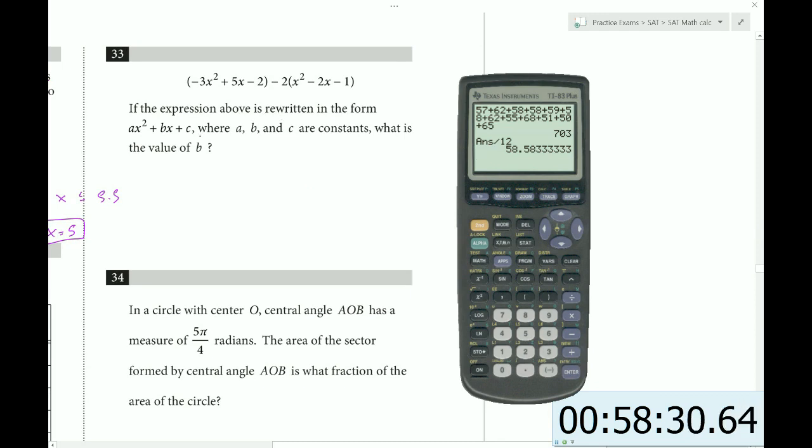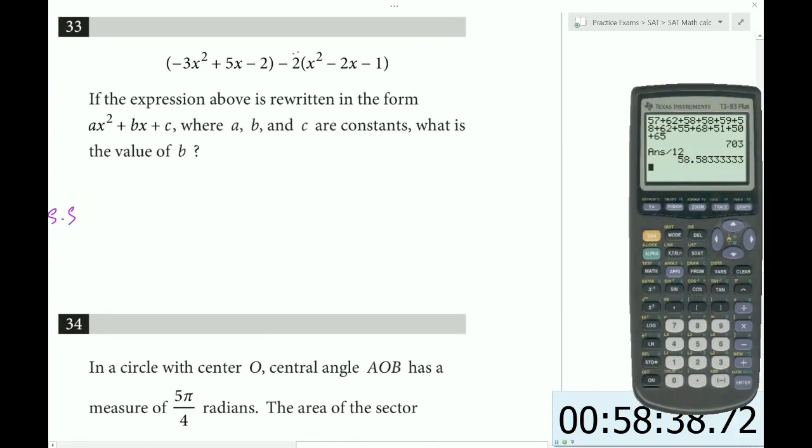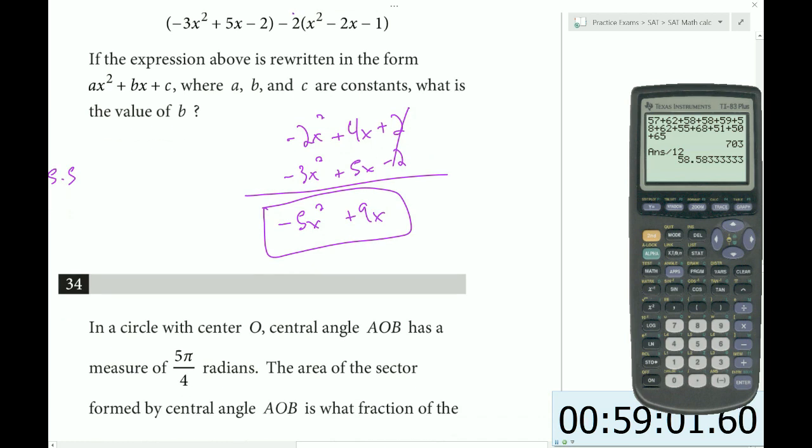If the expression above is rewritten in the form ax squared plus bx plus c, what is the value of b? Our first step is to distribute this minus 2. So we get minus 2x squared plus 4x plus 2, combined with minus 3x squared plus 5x minus 2. If we combine these, we get minus 5x squared plus 9x. So the value of b, the coefficient of x, is 9.